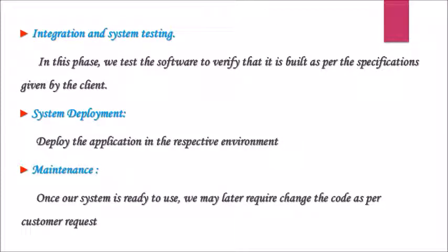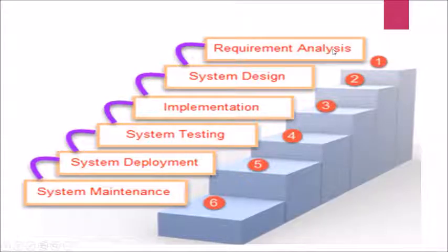Once our system is ready to use, we may later require changes to the code as per customer request. The result of each phase is one or more documents. The following phase shall not start until the previous phase is complete. In practice, the stages overlap and feed information to each other. During design, problems with requirements are identified. During coding, design problems are found and so on. The software process is not a simple linear model but involves a sequence of iterations of the development activities. Because of the cost of producing and approving documents, iterations are costly and involve significant rework. The waterfall model should only be used when the requirements are well understood and unlikely to change significantly during system development.